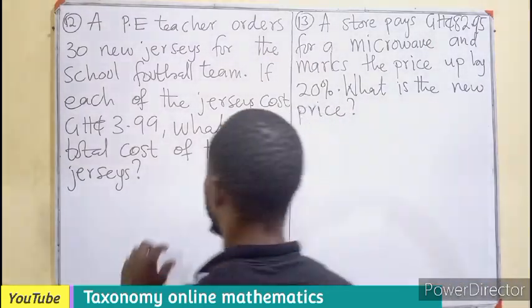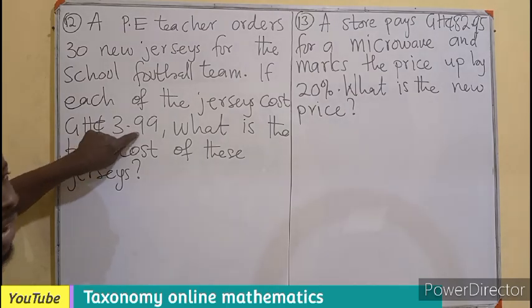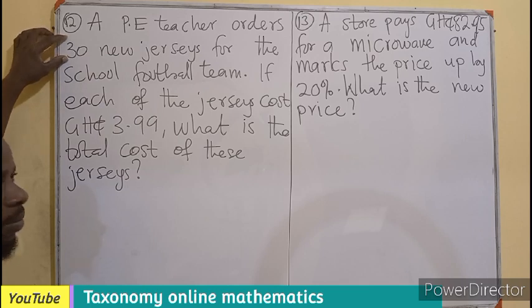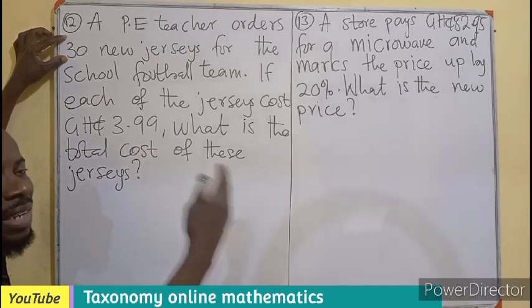Simply put, we are having one jersey at the cost of 3.99 cedis. But the jerseys are how many? They are 30, meaning there are 30 groups of 3.99 cedis.